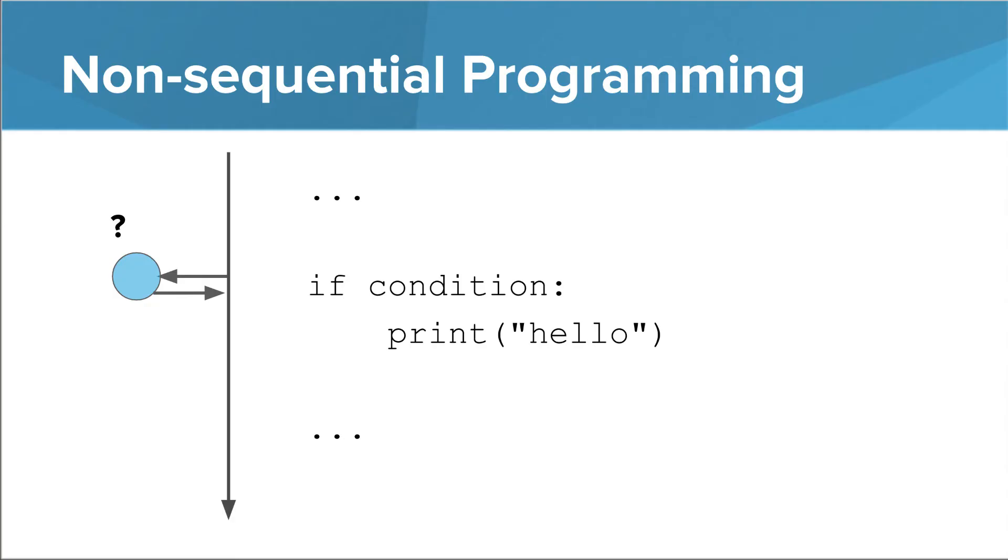Tying this back to the visualization from earlier, you can imagine that the blue circle is a piece of code that prints hello to the screen. The interpreter may or may not visit that circle depending on the value of condition. And in this example, the interpreter could take one of two possible paths depending on the value of condition. So take a look at the eyes of that insect looking thing on the left, and imagine that the circle on the left is the if branch, and the circle on the right is the else branch.